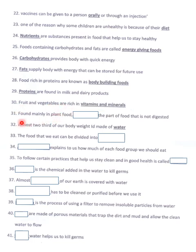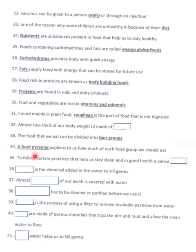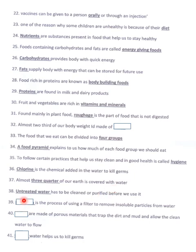Fruits and vegetables are rich in vitamins and minerals, found mainly in plant food. Roughage is the part of food that is not digested. Almost two-thirds of our body weight is made of water. The food we eat can be divided into four groups. A food pyramid explains how much of each food group we should eat. To follow certain practices that help us stay clean and in good health is called hygiene. Chlorine is the chemical added to water to kill germs. Almost three-quarters of the Earth is covered with water. Untreated water must be cleaned and purified before use. Filtration is the process of using a filter to remove insoluble particles from water. Filters are made of porous materials that trap dirt and mud and allow clean water to flow through. Boiling water helps kill germs.